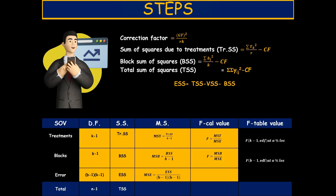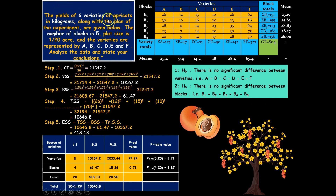As an example, we evaluate six varieties of apricot in terms of yield in kilograms, arranged in five blocks. We need to determine whether there exists a significant difference between the six varieties and whether blocking has a significant effect. Rows represent blocks and columns represent treatments. We calculate totals across treatments and across blocks to get treatment totals, block totals, and ultimately the grand total.